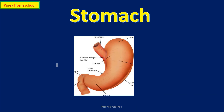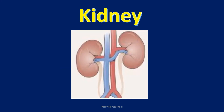Stomach. The food we eat goes into the stomach, where it is digested. The main job of the stomach is to store and break down the food we eat so that it can be digested. Kidney. We have two kidneys — one on the left side and one on the right side. They filter the waste out of our blood as urine. The kidneys filter the blood, take out all the waste, and send it to the bladder in the form of urine.